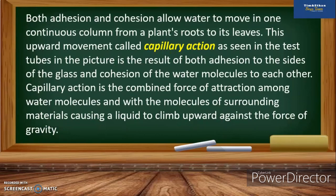Both adhesion and cohesion allow water to move in one continuous column from a plant's roots to its leaves. This upward movement is called capillary action, as seen in test tubes — it is the result of adhesion to the sides of the glass and cohesion of water molecules to each other. Capillary action is the combined force of attraction among water molecules and surrounding materials, causing liquid to climb upward against gravity. Without capillary action, water would not be delivered to plants and they would eventually die.